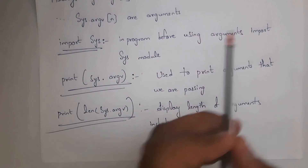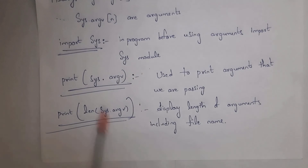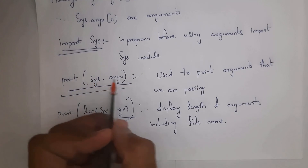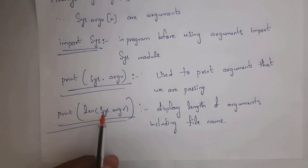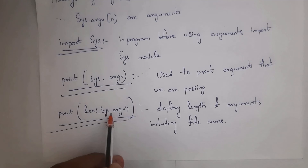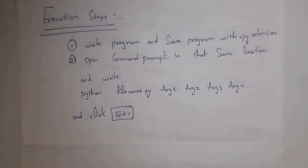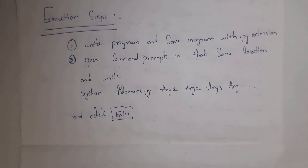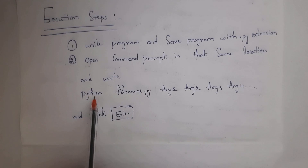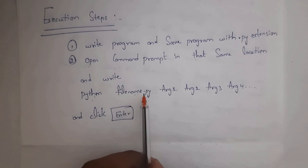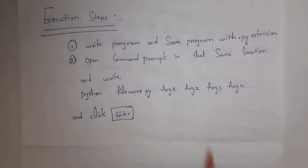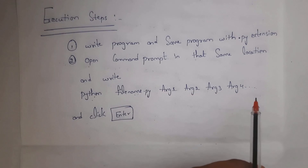In the program, before using arguments, first we need to import sys module. Then write 'print sys.argv' to print the arguments we are passing, and 'print len(sys.argv)' to display the length of arguments including the filename. For execution: write the program and save it with a .py extension, open the command prompt in the same location as your file, type 'python3 filename.py' followed by multiple arguments, click Enter, and you will get the output.